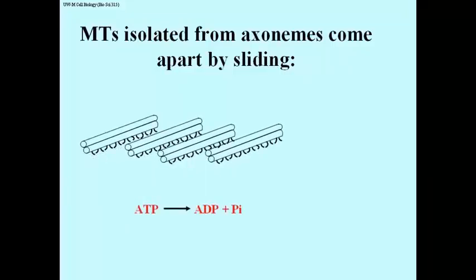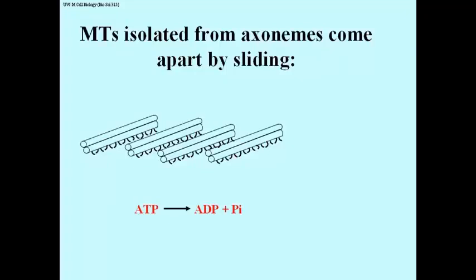Add ATP and if you stop the action almost as soon as you add the ATP, you can see microtubules that have walked along one another but have not yet dissociated. If you allowed that to continue, the microtubules walking along one another would reach the end of the microtubule they are walking on and would fall off, giving you a tube full of dissociated individual doublets. You can see in the electron microscope a partially disassembled sheet of microtubules if you stop the action almost immediately after adding ATP.